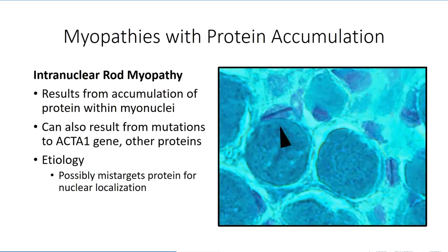The second class of protein accumulation myopathy we will address is intranuclear rod myopathy. As we discussed, mutations to the ACTA1 gene can lead to nemaline rod myopathy, but a separate mutation to this gene, as well as other genes, can also result in intranuclear rod myopathy. It is not entirely certain how this form of protein accumulation occurs, but it is believed to be due to mutations in cytosolic proteins that create an erroneous nuclear localization signal, which mistakenly targets the protein to the nucleus. This creates difficulties with the normal function of the myonucleus.